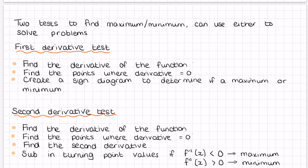The second derivative test: you find the derivative of the function and find where it equals zero. Then from there we find the second derivative. We substitute our turning points into the second derivative. If the answer is less than zero, it's a maximum. If it's greater than zero, it's a minimum.